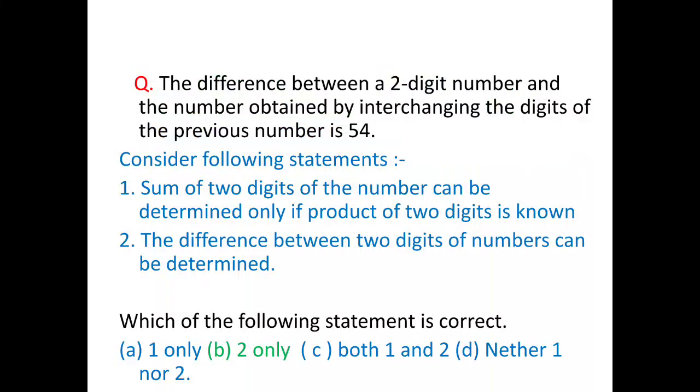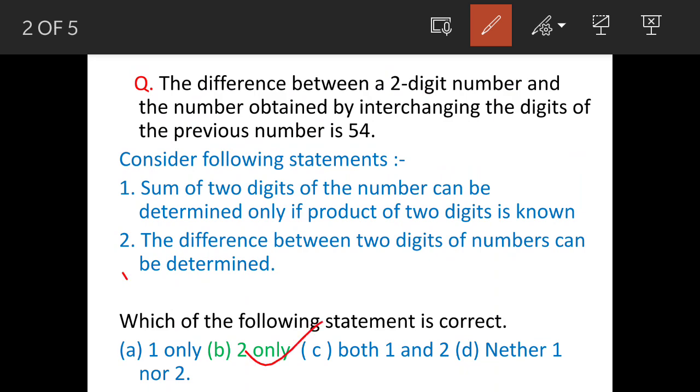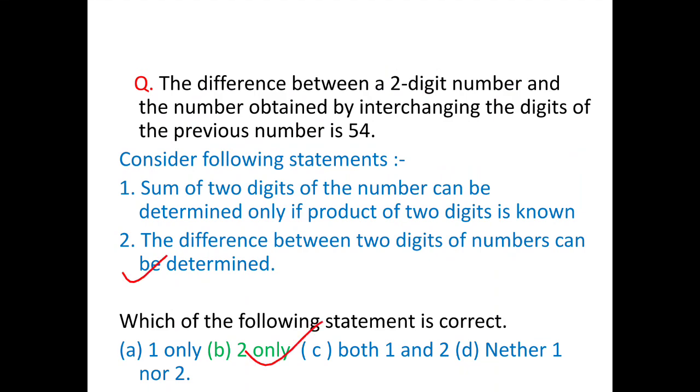Consider the following statements: statement one, sum of two digits can be obtained if the product is known, and statement two, the difference between two digits can be determined. We have to find out what is possible, and the answer is option b, that is statement two only. This is what is possible. Now we will see how.